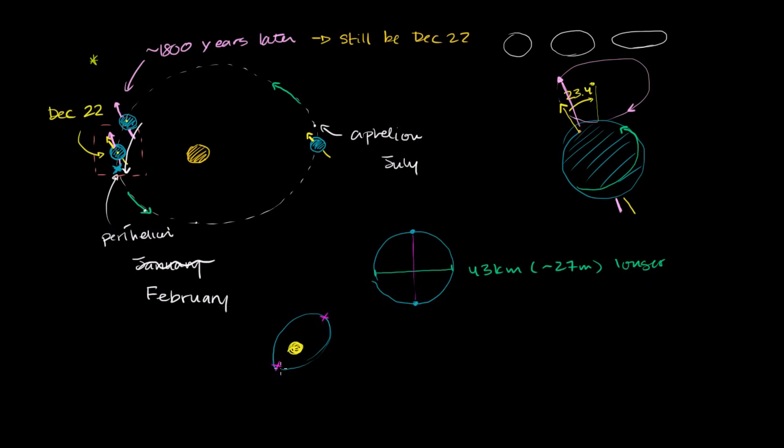And so if we wait several thousands of years, our orbit might look a little bit like this. Our orbit will look like this. The actual perihelion will have rotated. So our orbit will look like this. The actual ellipse would have rotated a little bit.